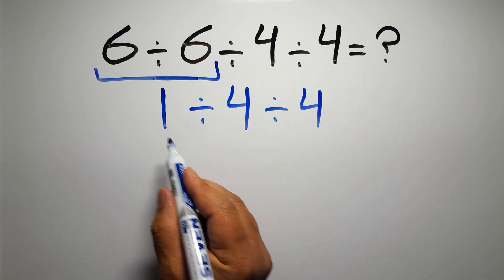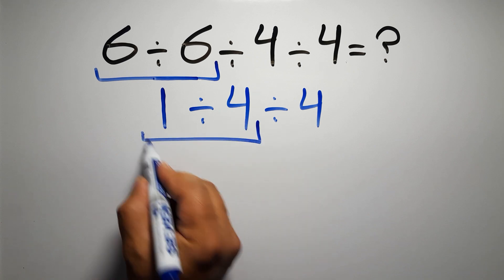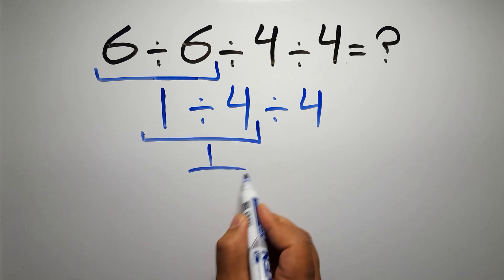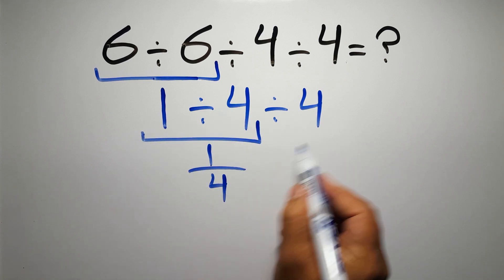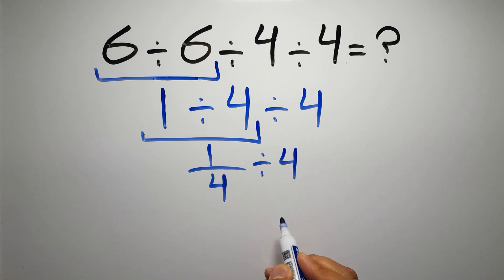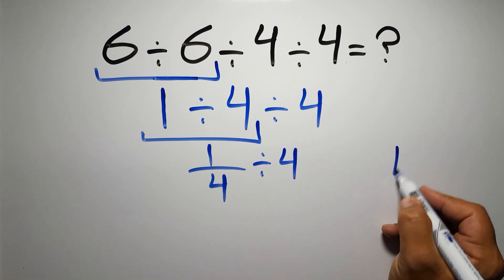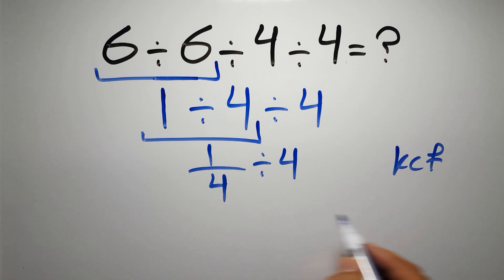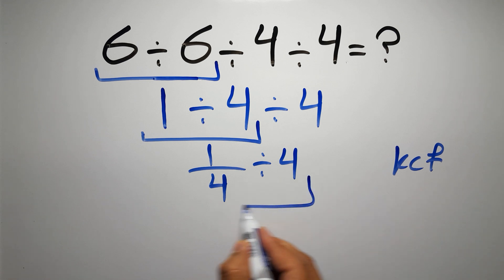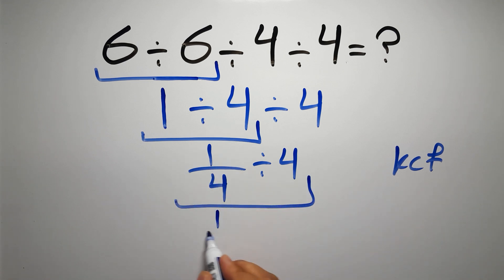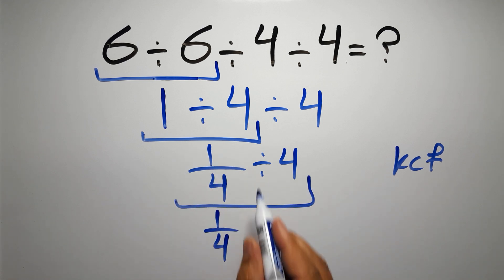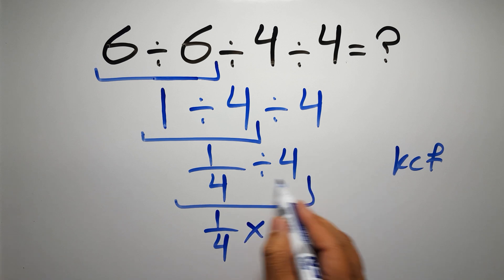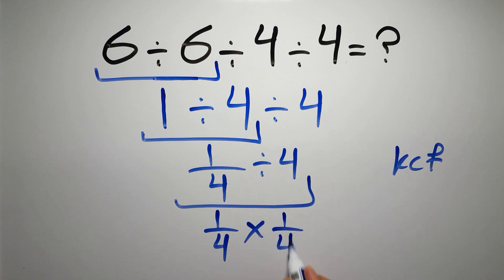Now we have to do this division. 1 divided by 4 can be written as 1 over 4, then divided by 4. According to the KCF rule — K stands for keep, C stands for change, and F stands for flip — we keep the first fraction, change division to multiplication, and flip the second fraction. So we have 1 over 4 times 1 over 4.